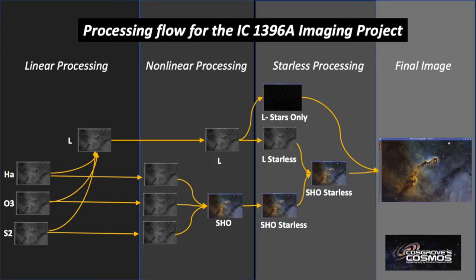Keep in mind that I have a very detailed step-by-step processing walkthrough as part of the posting for this imaging project on my website. My goal here is to give you a 20,000 or 30,000 foot view to get an idea of how the project flowed from a processing point of view and how the image evolved. This chart is my attempt to capture the flow of the image processing — starting with linear processing, going into non-linear processing, starless processing, and then how I pull everything together to get to the final image.